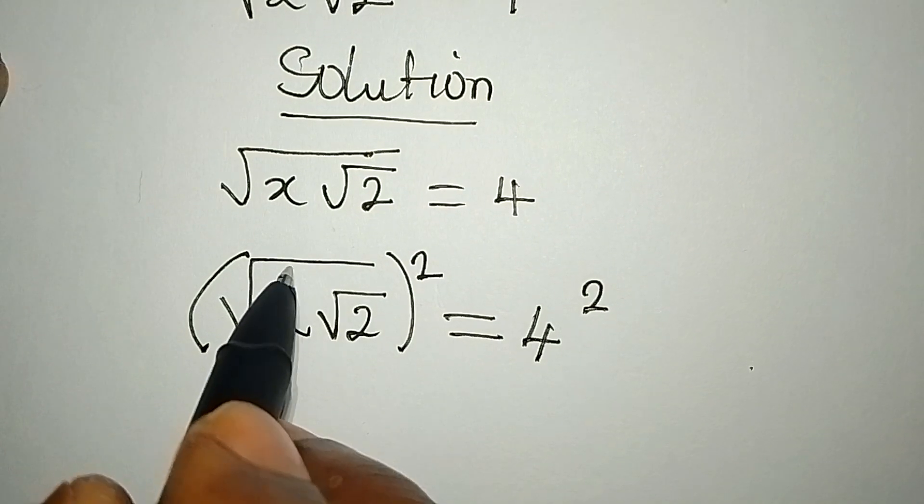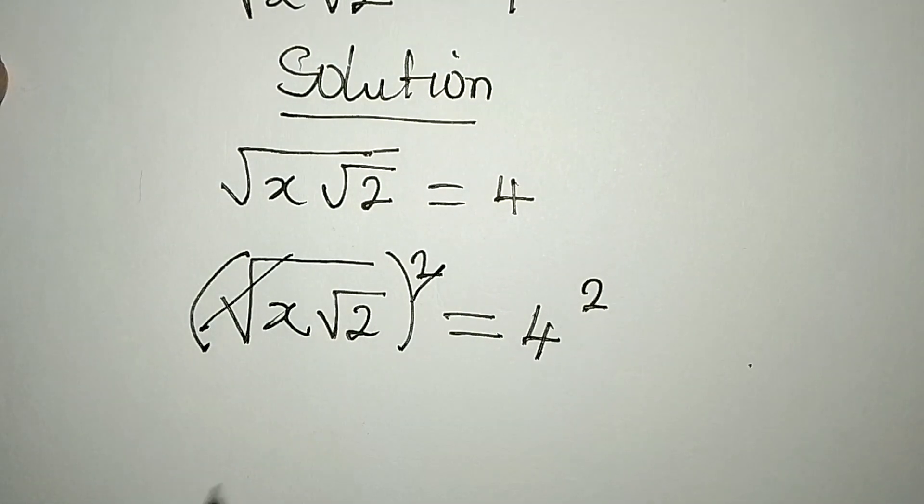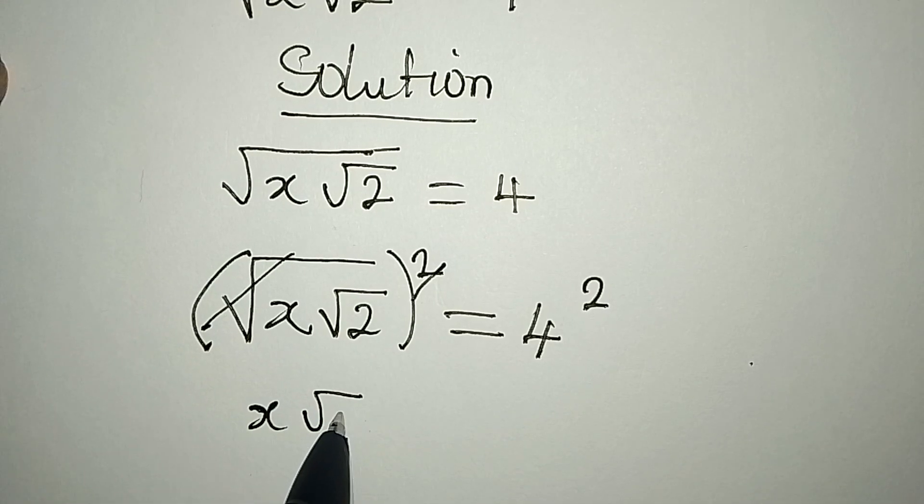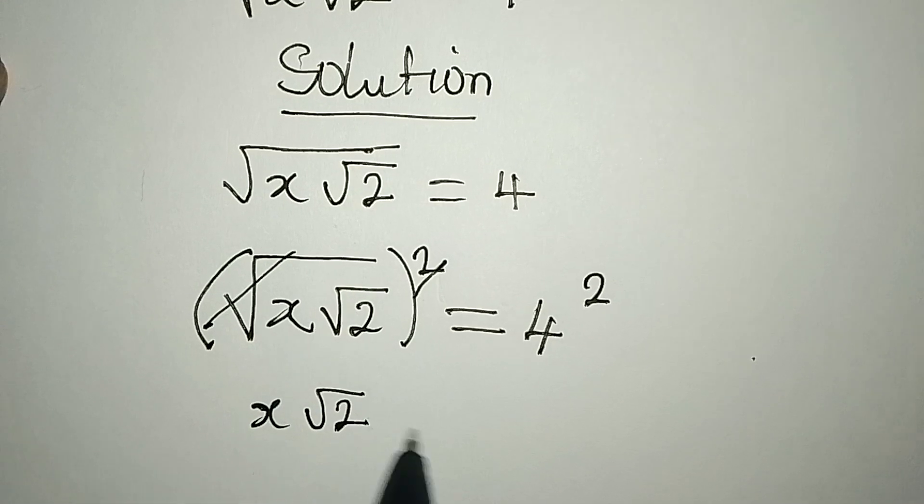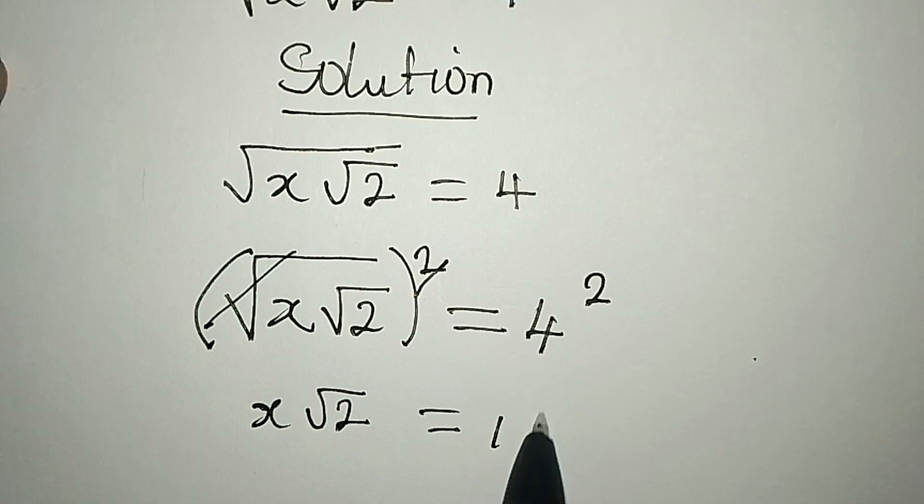Then the next thing is let this cancel this so that x square root of 2 will be equal to 16.